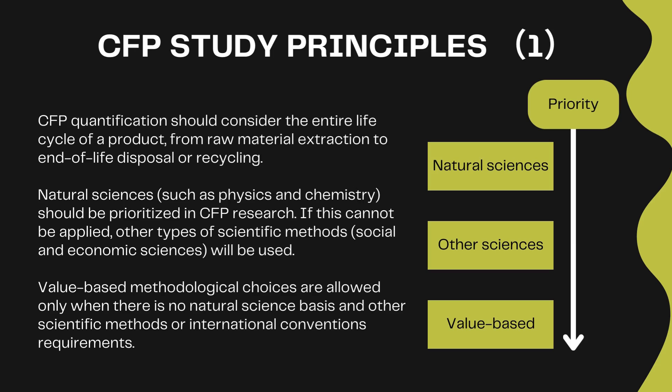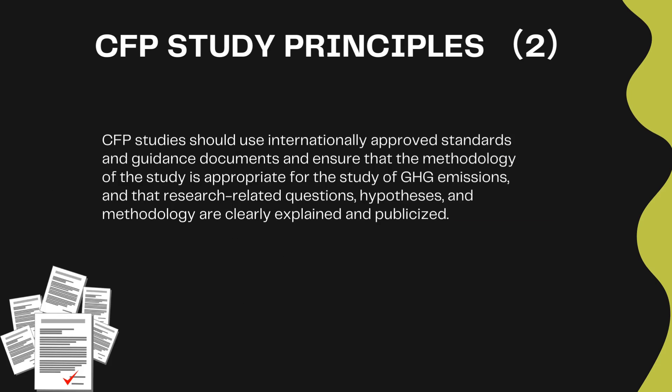CFP study principles. CFP quantification should consider the entire life cycle of a product, from raw material extraction to end-of-life disposal or recycling. Natural sciences, such as physics and chemistry, should be prioritized in CFP research. If this cannot be applied, other types of scientific methods — social and economic sciences — will be used. Value-based methodological choices are allowed only when there is no natural science basis and other scientific methods or international conventions requirements. CFP studies should use internationally approved standards and guidance documents, and ensure that the methodology is appropriate for the study of GHG emissions, and that research-related questions, hypotheses, and methodology are clearly explained and publicized.